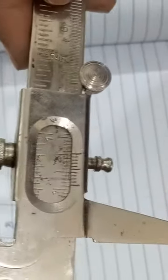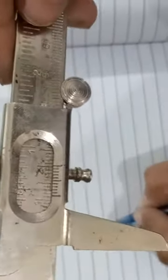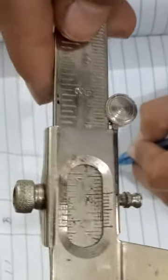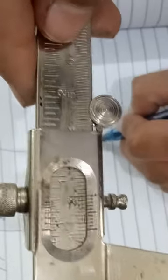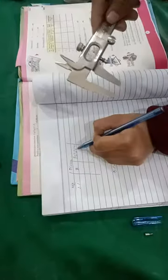Now, as we know that the least count of vernier calipers is 0.1 mm, while in cm, it will be 0.01 cm. Now, we will multiply our division with the least count. This is 0.03.